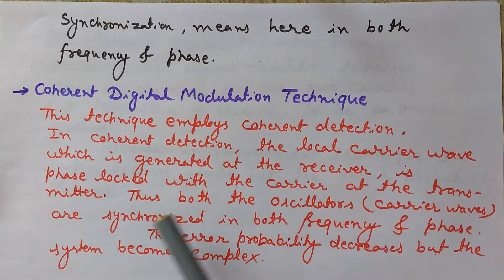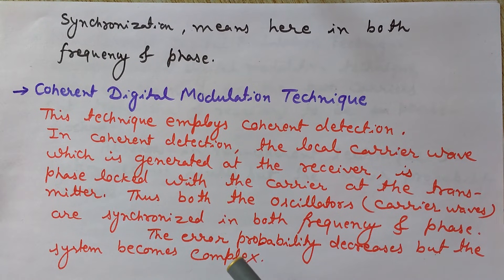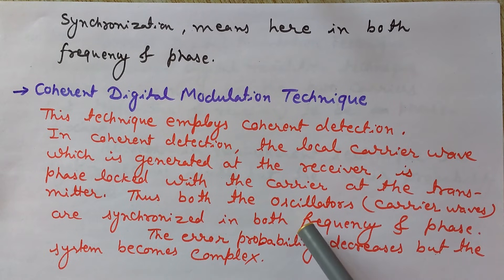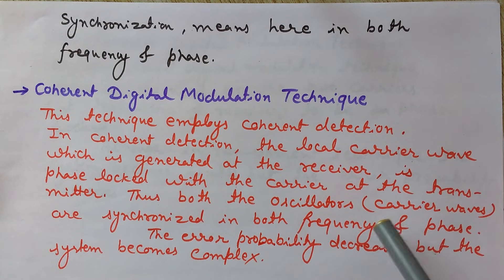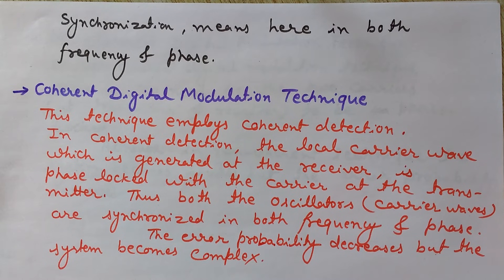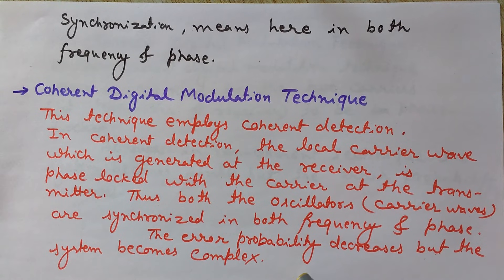In coherent detection, the two carriers — one at the transmitting end and one at the receiving end — are in synchronism; they are phase-locked and synchronized in both frequency and phase. The advantage of this synchronization is that it reduces the error probability. However, the system becomes more complex — the complexity of the system increases when using coherent digital modulation technique.